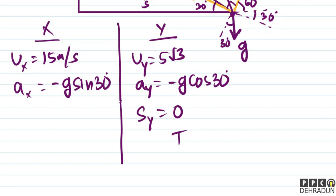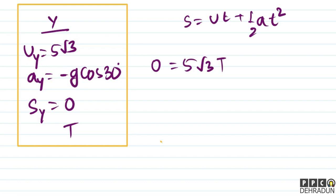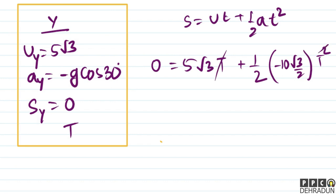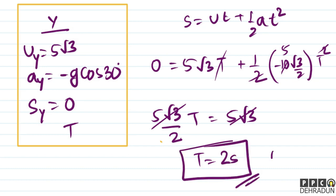sy = 0 condition लगाने पर: sy = Uy·t + ½·ay·t² = 0। यानी 5√3·t − ½ × 10 × (√3/2) × t² = 0। एक t cancel करने पर: 5√3 = (5√3/2)·t। तो t = 2 seconds। मतलब exactly 2 seconds के बाद particle wedge को hit करेगा।